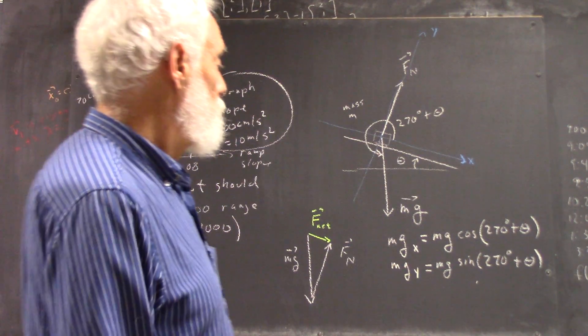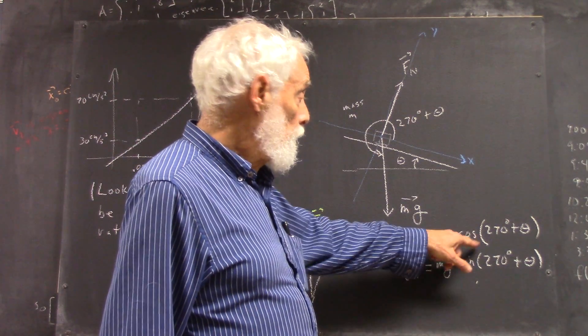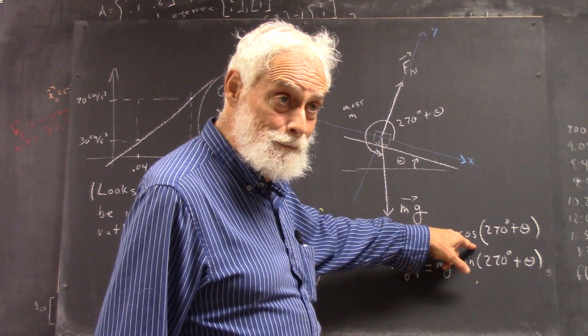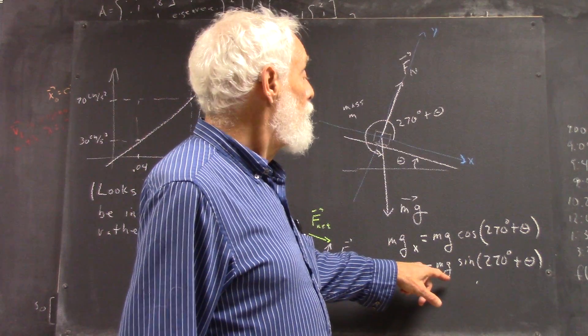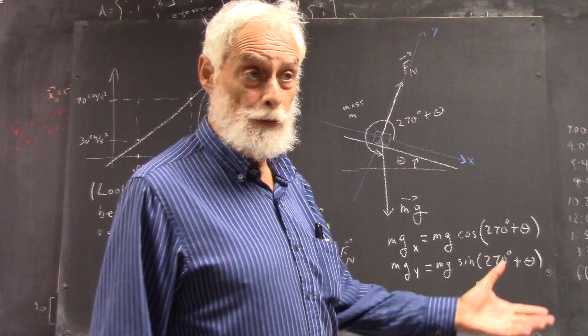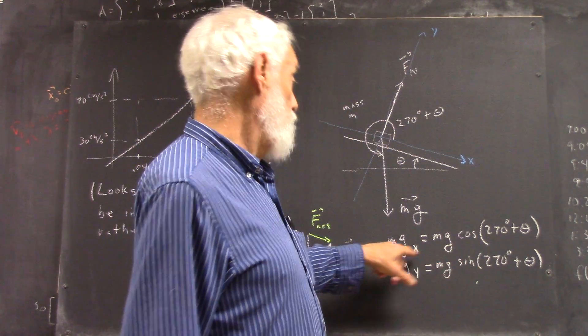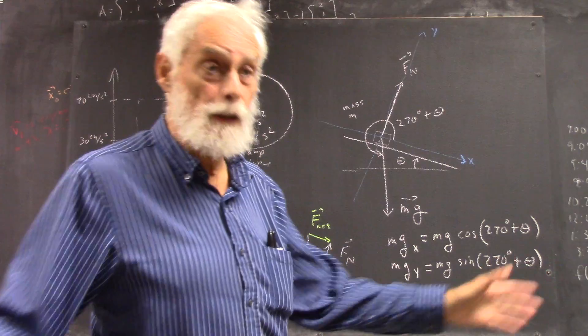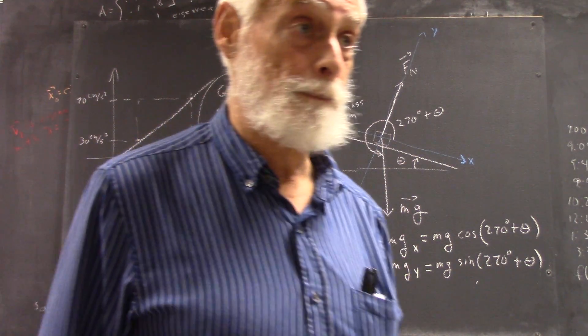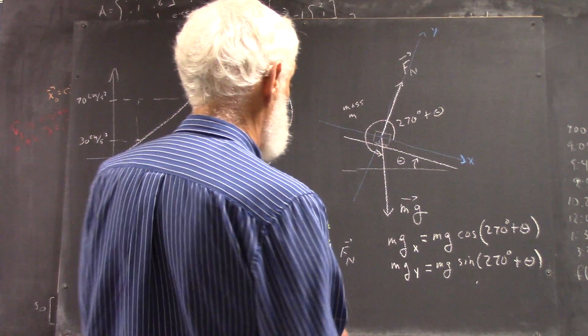Because right now, with circular definition, the x component is automatically whatever the magnitude is times the cosine of that angle. And this is automatically the magnitude of the sine of the angle, always. So if you get the angle right, all you have to do is say the x is the cosine, the y is the sine, and you don't have to get confused. No confusion.